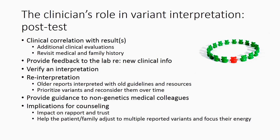This may involve pursuing additional clinical evaluations or revisiting the medical and family history with the patient. The clinician can provide feedback and new clinical information to the testing lab so that it can be included in the laboratory's internal data and used for subsequent interpretations. A clinician can also search for data not specifically outlined in a lab report or verify the interpretation of literature cited in the report to determine if they agree. If a variant's interpretation does not make sense, that would be a good opportunity to contact the laboratory to discuss.